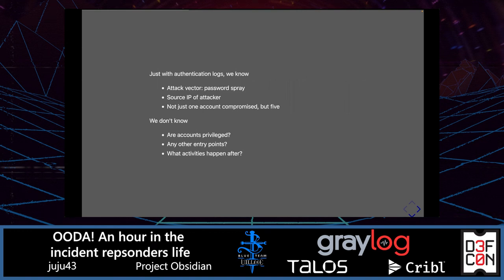Just with the authentication log, we know the attack vector is a password spray. We have the source IP of the attacker — possibly one, possibly more. And we have identified that not just one account was compromised, but five. It's important here that we didn't jump the gun based on the user's report — if we had acted immediately, we would have only contained one user, which would not have blocked the attacker because there were five access points.